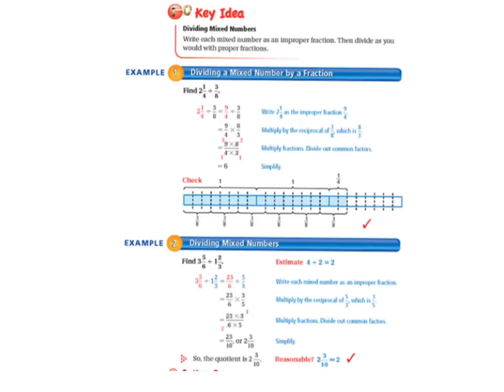Today we'll be working on the examples in your textbook on pages 72 and 73. Take a moment to write the key idea at the top of page 72 in your math notebook. Let's read it together, Dividing Mixed Numbers. Write each mixed number as an improper fraction, then divide as you would with proper fractions.